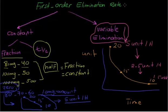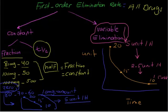Which drugs follow first-order elimination? Basically all drugs. Not like just phenytoin or aspirin — those, along with ethanol at high doses, follow zero-order kinetics. High doses of phenytoin, ethanol, and aspirin follow zero-order kinetics, while essentially all other drugs follow first-order elimination.